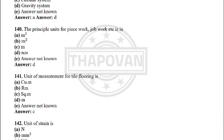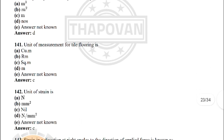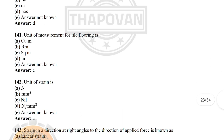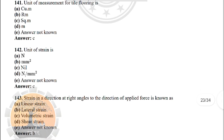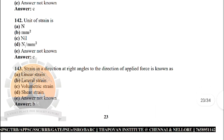Next: principal unit for piece work, job work etc. is in — the correct answer is: numbers. Next: unit of measurement for tile flooring is — the correct answer is option C: square metre. Next: unit of strain is — the correct answer is option C: nil (dimensionless).